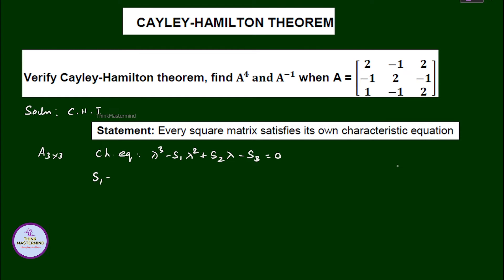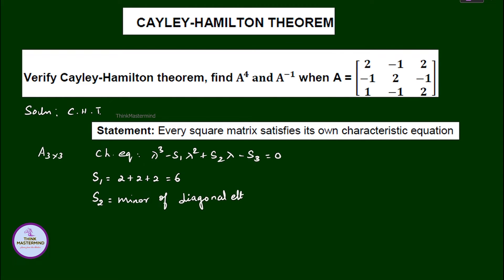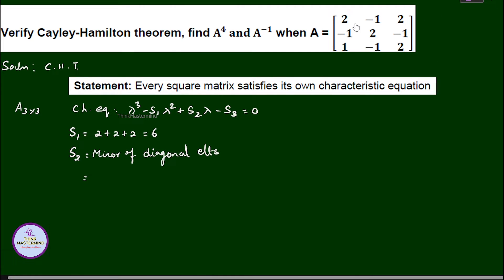S1 is the sum of the main diagonal elements, that is 2 plus 2 plus 2 equals 6. S2 is the sum of the minors of the main diagonal elements.